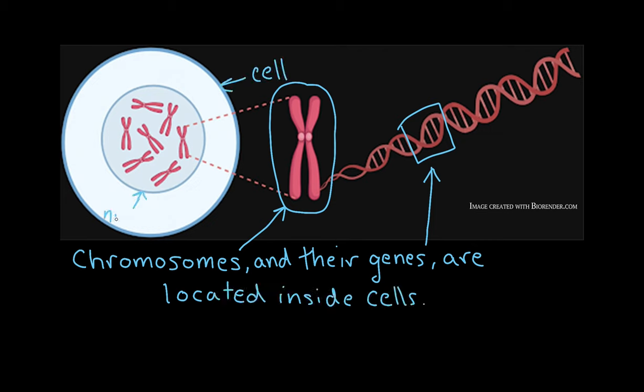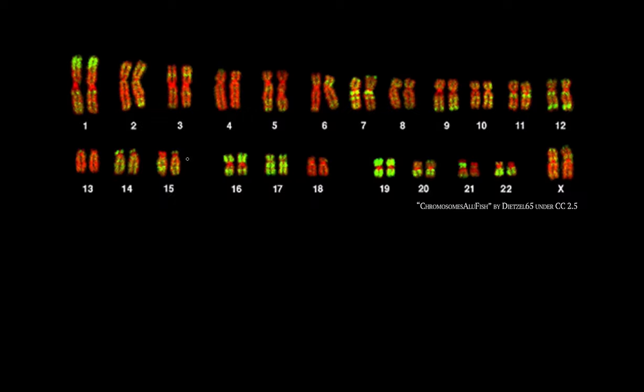In multicellular organisms, the chromosomes are found within the cell's nucleus. Many species have chromosomes that come in matched pairs. For example, here's an image taken with a microscope of chromosomes from a typical human body cell. The chromosomes are laid out in an organized way, allowing us to see that humans have 46 chromosomes, which can be organized into 23 pairs.